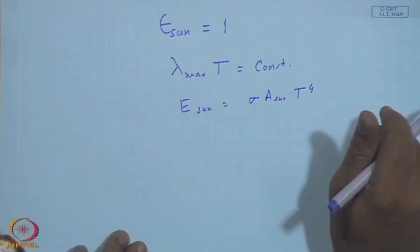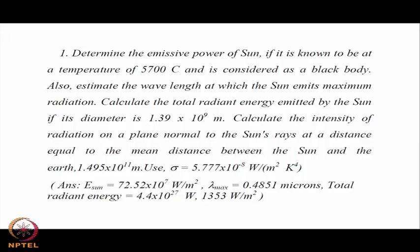Calculate the intensity of radiation on a plane normal to the sun's rays at a distance equal to the mean sun-Earth distance, 1.495 × 10¹¹ m — that will be nothing but the solar constant. The answers, if you plug in the formulas, give E_sun = 72.52 × 10⁷ watts per meter square.